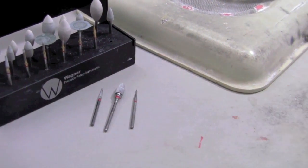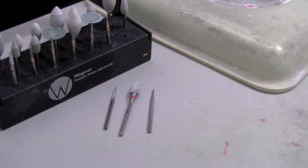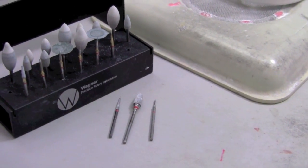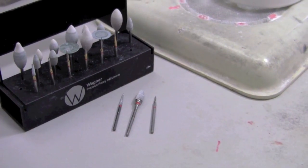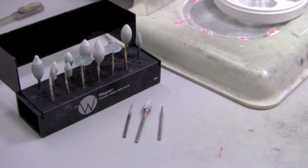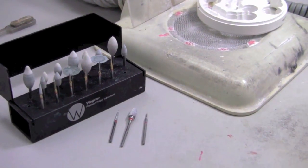The bigger carbide here I like for grinding off the sprues because it's very smooth and fast. And then this little tiny pointy thing, and you'll see it in action, I use to enhance occlusal morphology on posteriors to deepen the pits and fissures and make it look a little more natural.